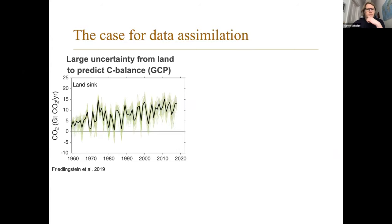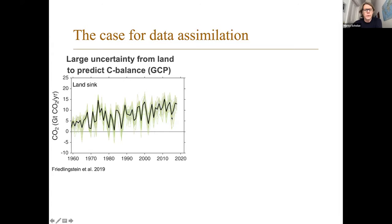So the case for data assimilation - I don't think I have to make a long introduction here. You probably are all aware of this figure from the Global Carbon Project. It's showing essentially the net land CO2 flux, the net land sink from the TRENDY ensemble. There are around a dozen models involved, and there's a large spread. Each green line is one single model, the black line is the model mean. You see there's a large spread, and at some years the models can't even agree on the sign - whether it's a land sink or a land source - for example, in 2003.